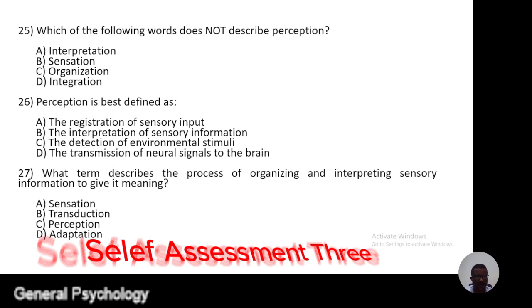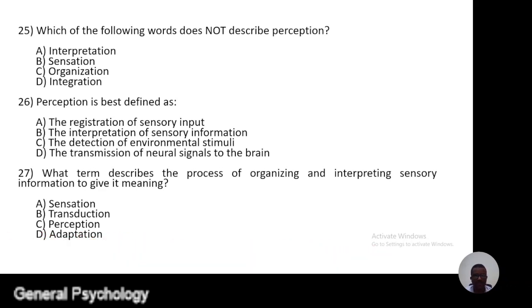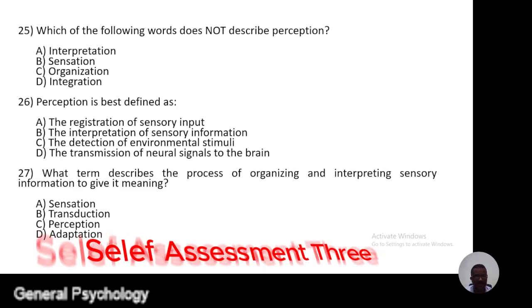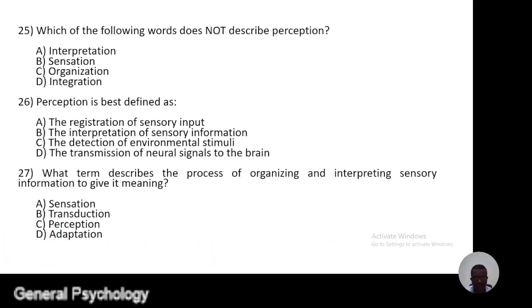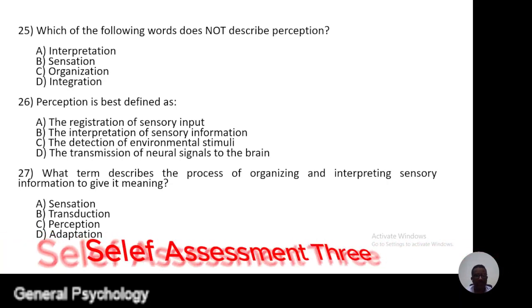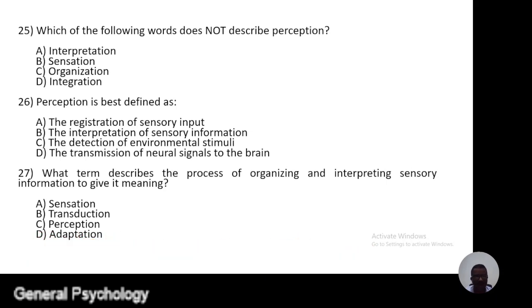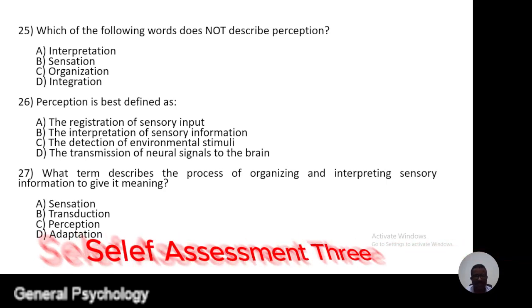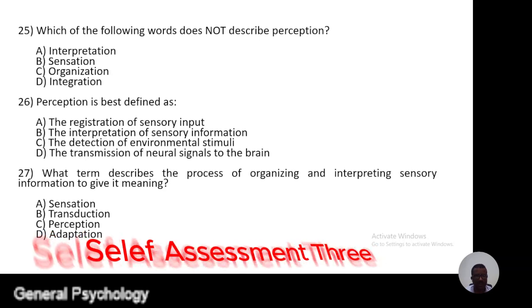Question number 26. Perception is best defined as: A, the registration of sensory inputs; B, the interpretation of sensory information; C, the detection of environmental stimuli; D, the transmission of neural signals to the brain.